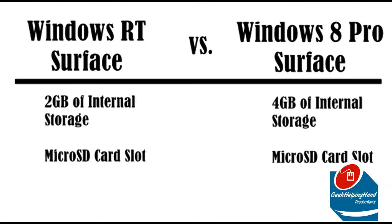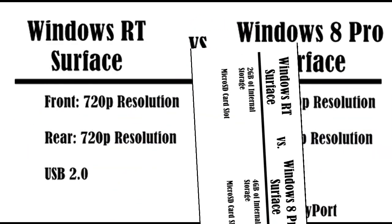Windows RT is for your average Windows consumer, which is why there's only 2GB of storage included, while Windows 8 Pro provides 4GB of storage. If you need more storage, you have the choice of buying a micro SD card to add more.